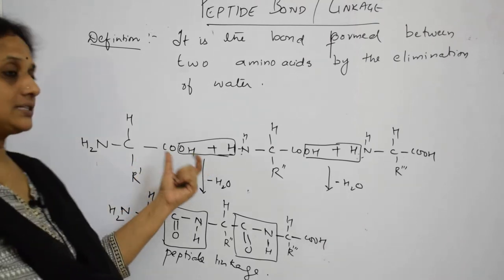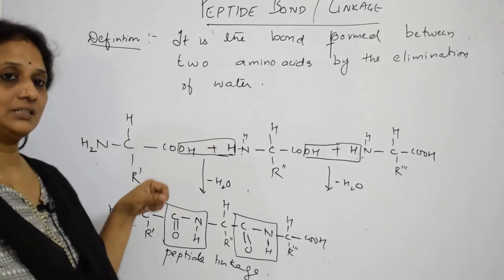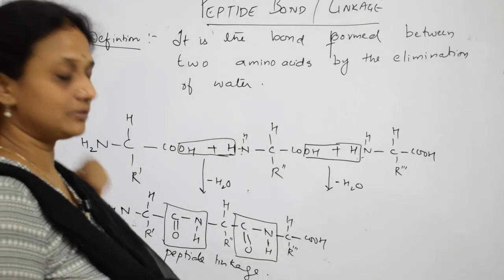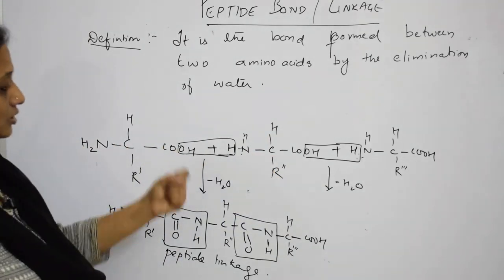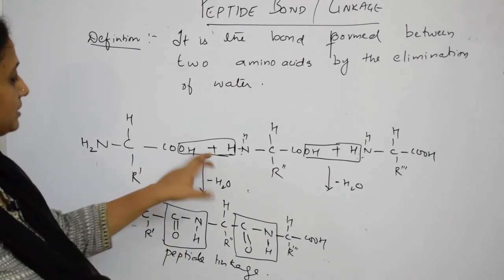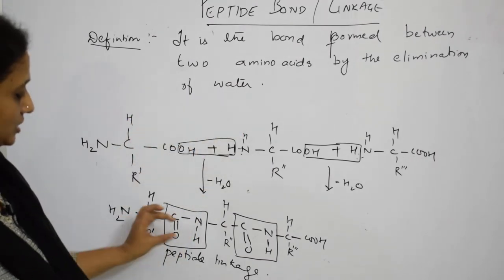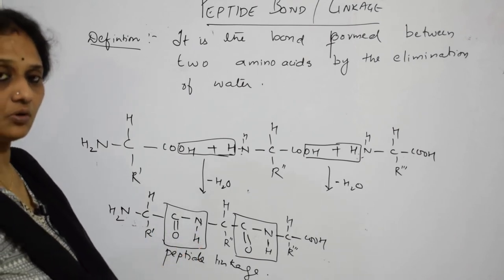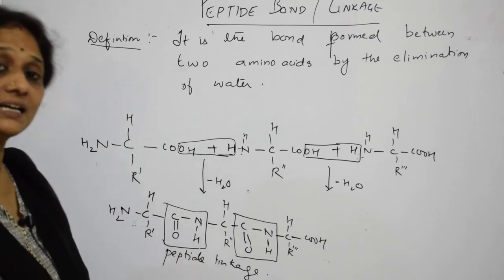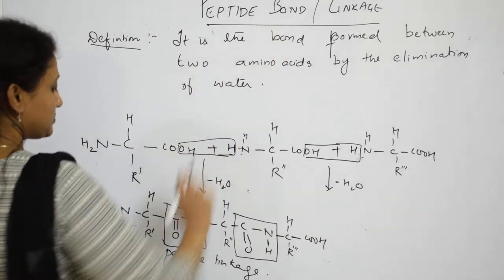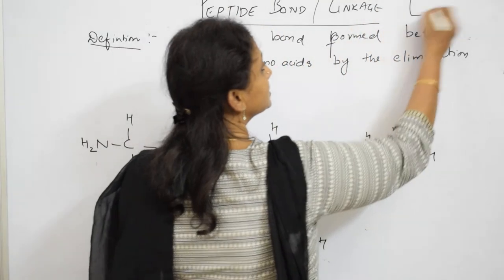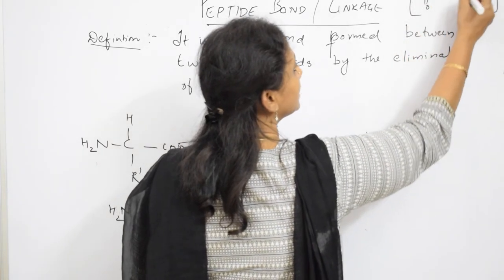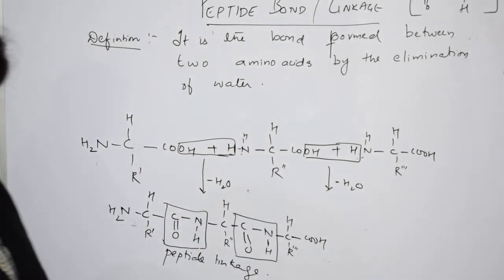Amino acids combine one after the other — for example, methionine followed by alanine. When one amino acid combines with another, there is an elimination of a water molecule, and finally the C=O and N–H combine together. This combination of C=O and N–H is called the peptide linkage or peptide bond. When writing in the exam, write it as C=O–NH to get marks.